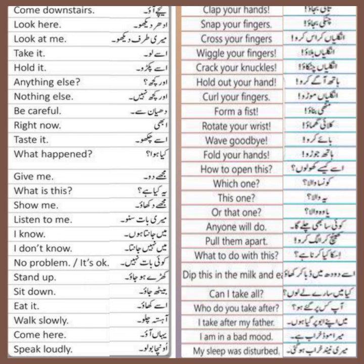Clap your hands — li bhajau. Snap your fingers — chitki bhajau. Cross your fingers — unglia cross karo. Wiggle your fingers — unglia hilau. Crack your knuckles — unglia chatkhau. Hold out your hand — aath aghe karo. Curl your finger — unglia molu. Form a fist — muti bhajau. Rotate your wrist — kalai gumau.